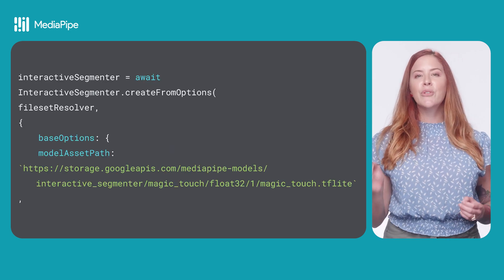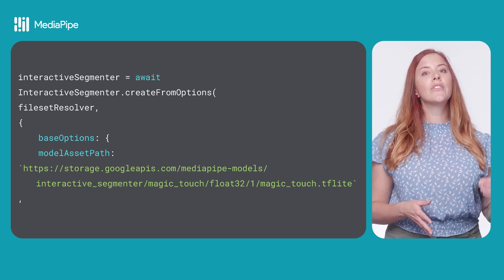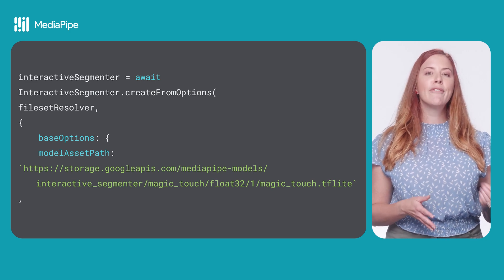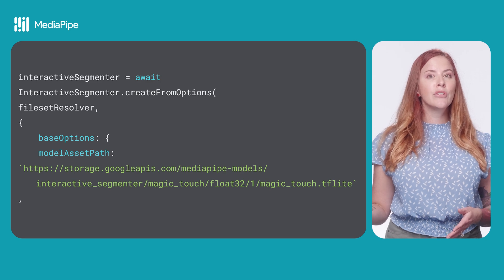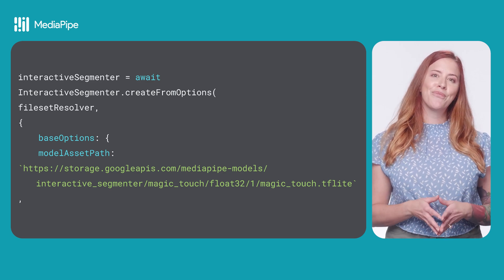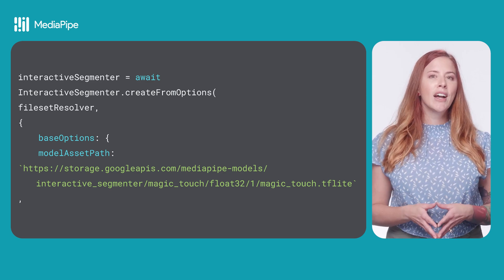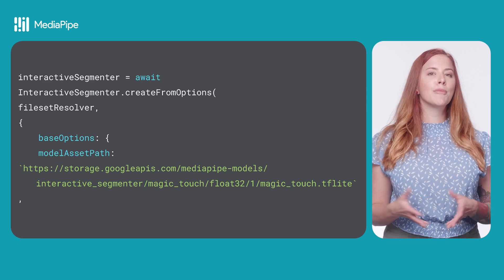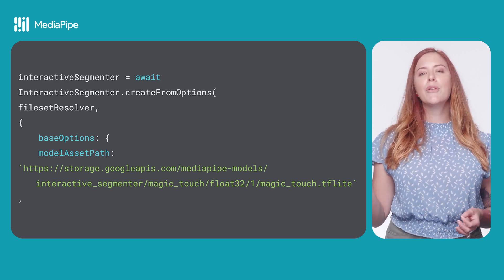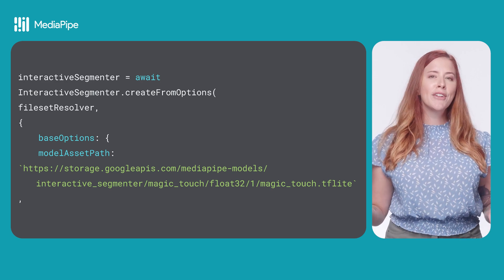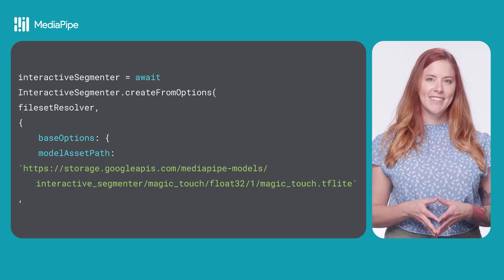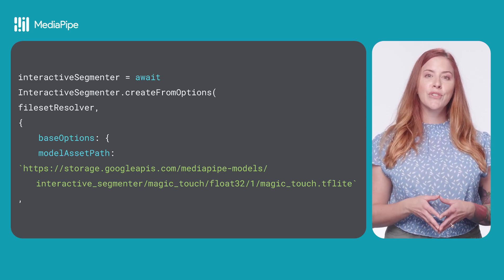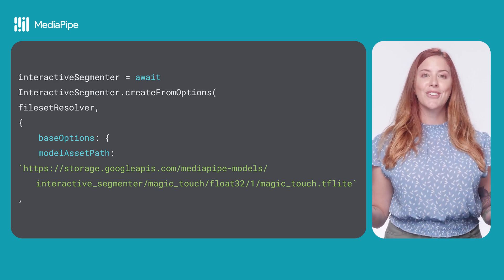Next, we create the InteractiveSegmenter using the InteractiveSegmenter createFromOptions method, passing the file set resolver you just created and the model. Notice that the two assets are linked from external URLs. For the best user experience, you don't want to bundle your model or WASM binary into the website. Instead, store them server-side and provide links when initializing your InteractiveSegmenter, as shown here.